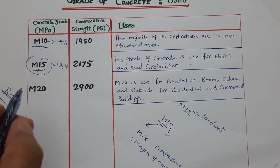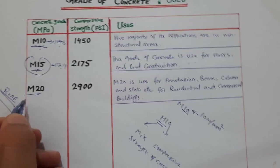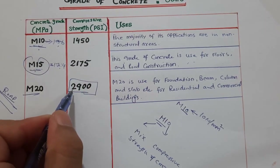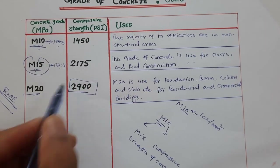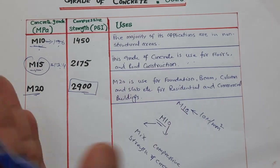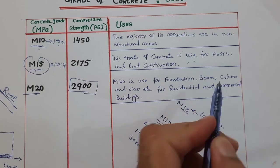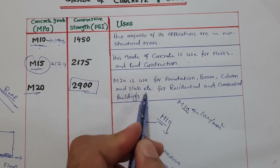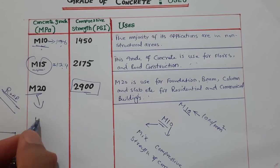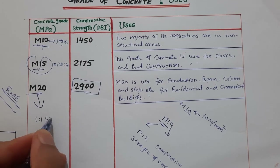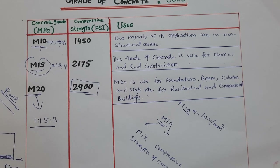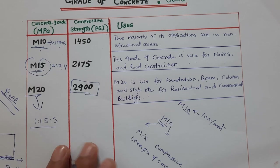M20 has a compressive strength of 2900 PSI. M20 grade of concrete is used for foundations, beams, columns, and slabs of residential and commercial buildings. Its mix ratio is 1:1.5:3 — one part cement, 1.5 parts sand, and three parts aggregate.